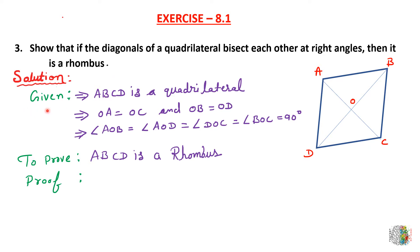So what do we have given here? ABCD is a quadrilateral and its two diagonals bisect each other at right angles. So OA, OC and OD — these diagonals are bisecting each other at right angles. So angle AOB, angle AOD, angle DOC, and angle BOC are each 90 degrees.